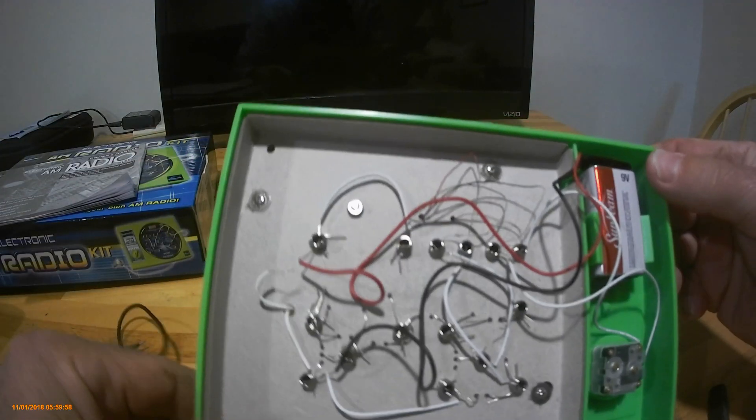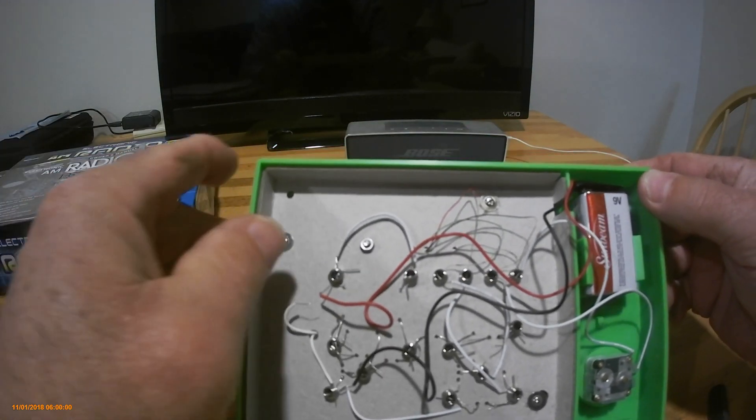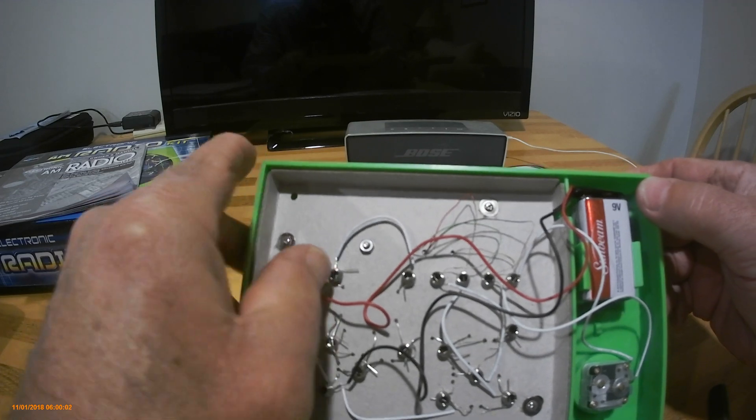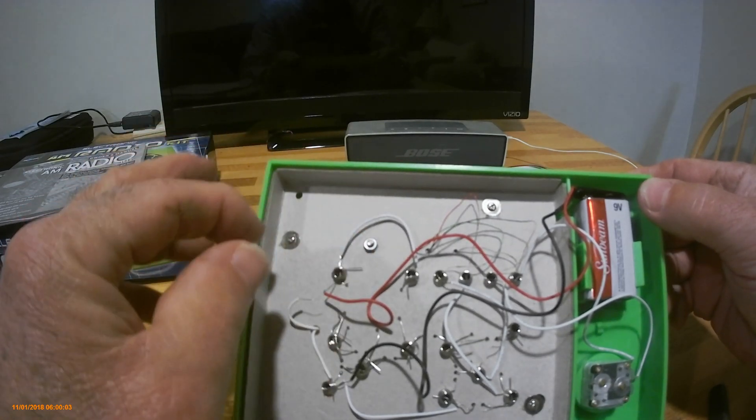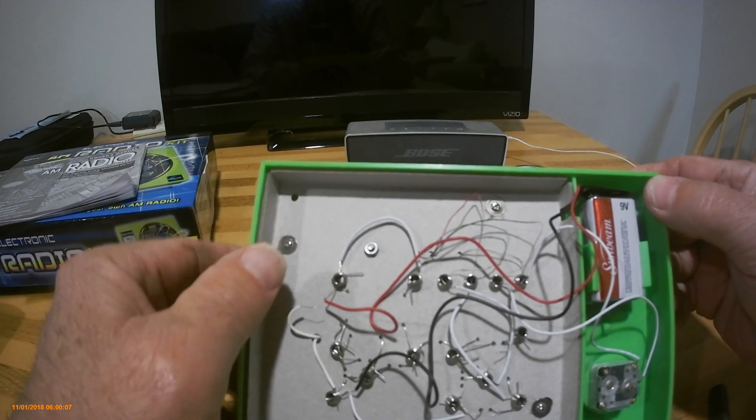All the component leads and the wires feed through on the bottom like this. All you have to do is lift up the spring and slide the component lead into the open space in the spring and then let it close.